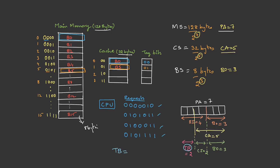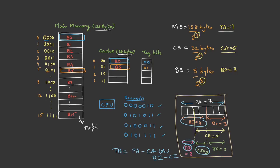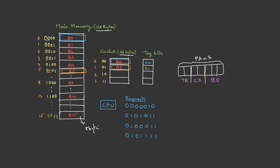To find the tag bits, there are two ways. Method one: tag bits equal physical address bits minus cache address bits — remove the cache address portion from the physical address and the leftover is your tag bits. Method two: tag bits equal block index bits minus cache index bits. Whichever is convenient, you can follow that approach. So in the physical address, the first few bits are the block offset, next is the cache index or line number, and the last bits are the tag bits.